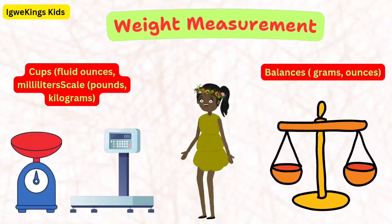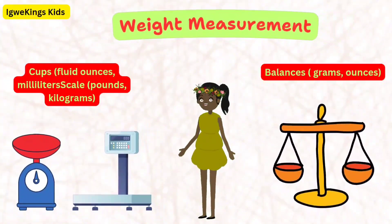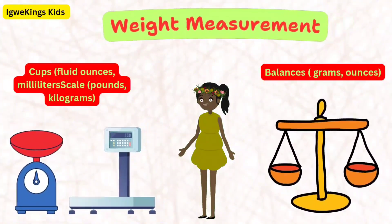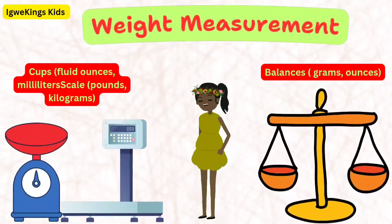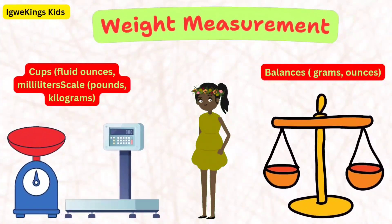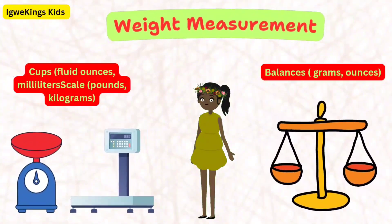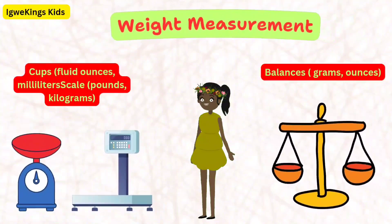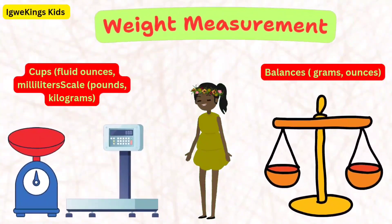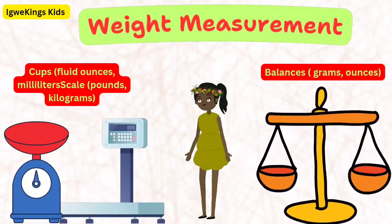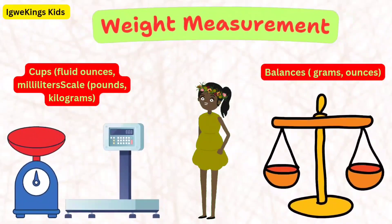We can measure weight using: scales — pounds and kilograms — perfect for weighing things like suitcases or pets; and balances — grams and ounces — perfect for weighing small things like toys and candy. Think about weighing a big bag of candy or a small toy!